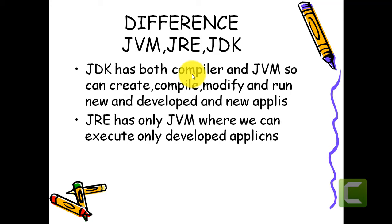When you install only the JRE, you only get the JVM in your system. What is the difference? When we install the JDK, we can create, modify, compile, and run programs — both new and already-developed applications. When we install only the JRE, we can only execute already-developed applications; we cannot create new applications, modify, or compile them. So I recommend you all to install the JDK on your machines.